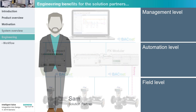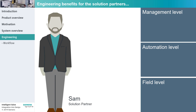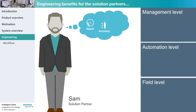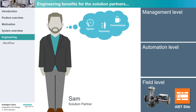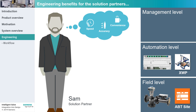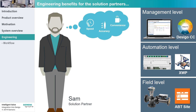Sam is a solution partner working with Siemens Building Automation and Management Systems. He views it as important that he can engineer his projects fast because time is money, error-free because troubleshooting at a later stage can be very time-consuming and expensive, and conveniently because working offline in the office is preferable to being on-site. Sam's tasks involve setting up the intelligent valves with ABT-Site, programming the PX Primary Automation Stations with XWorks Plus, and integrating the intelligent valves into DeZego CC.